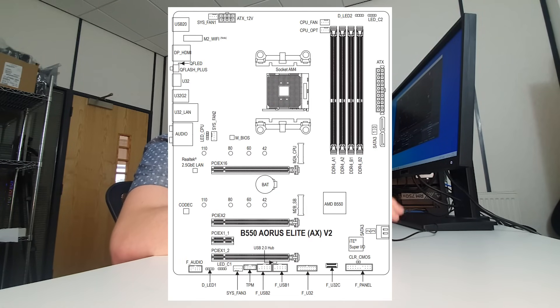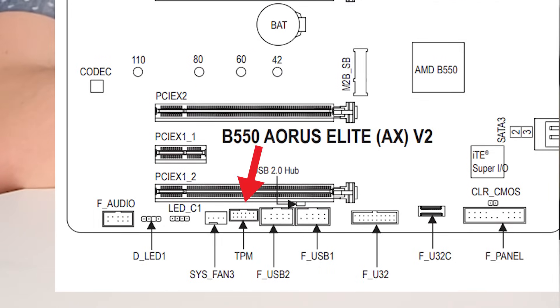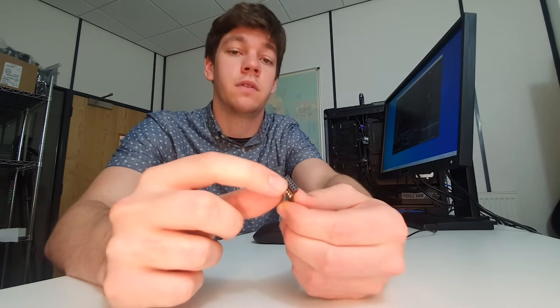Before we move over to the Intel-based system, what I'm going to do is use the TPM module on this AMD system, as we have a TPM socket on this motherboard, and we're going to see how that differs from using the integrated TPM. The motherboard in the AMD system is a B550 Aorus Elite AX V2. If you look at the schematic, you can see the TPM socket on the bottom left corner of the motherboard. On the actual TPM chip, one of the pins is blocked off so you can only plug it in one way. I'm going to fit this to the system now.